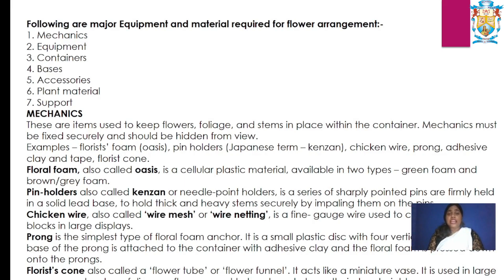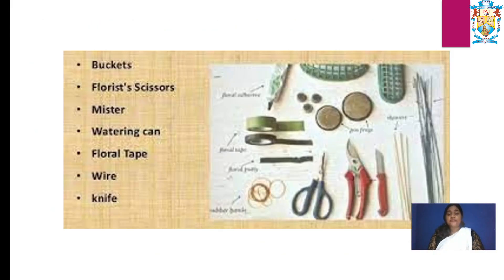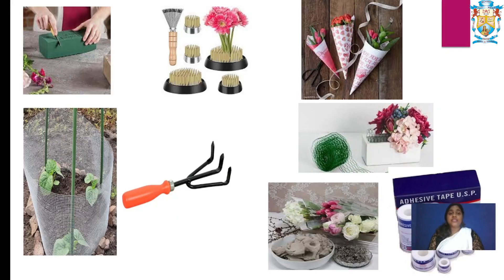The different equipment used in flower arrangement includes buckets, florist scissors, misters, watering cans, floral tape, wire, and a knife. We also use oasis, different prongs, cover colors, tapes, rings, and a plucker. These are the different types of equipment that we use in day-to-day flower arrangement work.